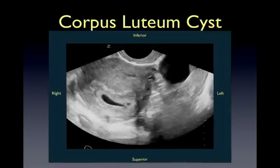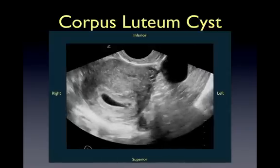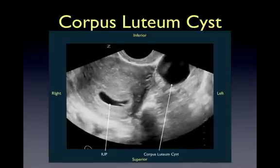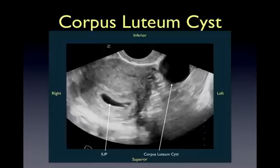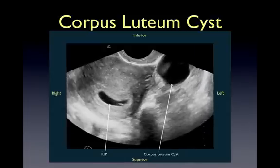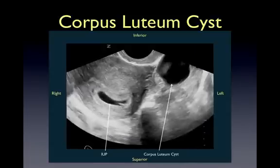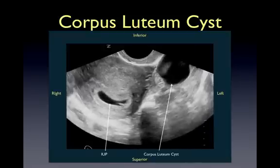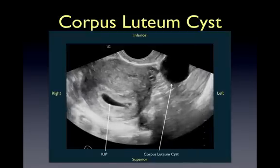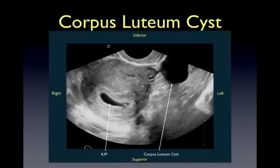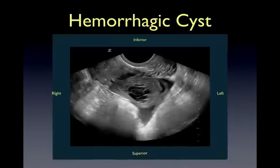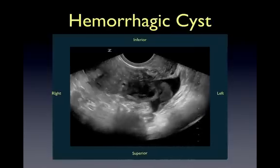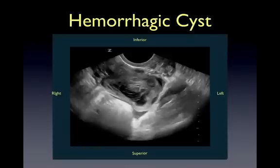Here is an example of a corpus luteum cyst in the setting of an IUP. Corpus luteum cysts result from an LH surge after ovulation and will persist during the first two to three months of pregnancy. They can reach up to 10 centimeters in diameter. Corpus luteum cysts, among others, may fill with blood and rupture, potentially leading to hemodynamic compromise.